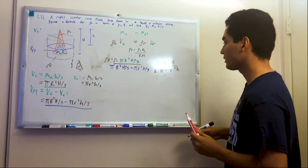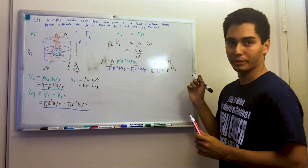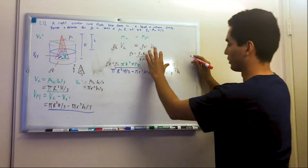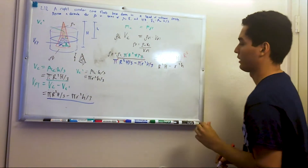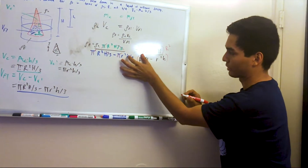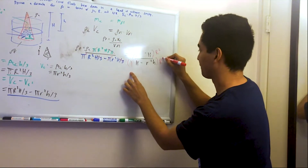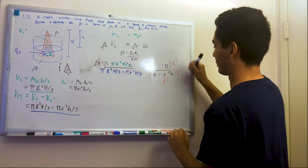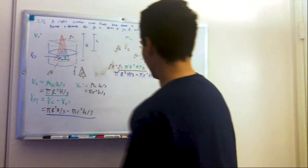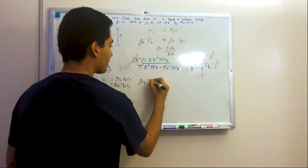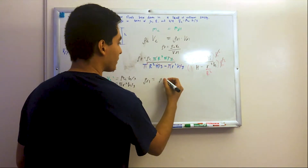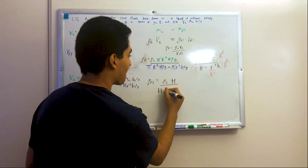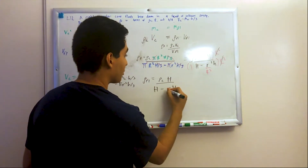I'm going to factor out a big R² from the denominator. Multiplying by R²/R², I can cancel out R², and we are left with rho of the fluid equals rho of the cone times H divided by H minus r²*h/R².